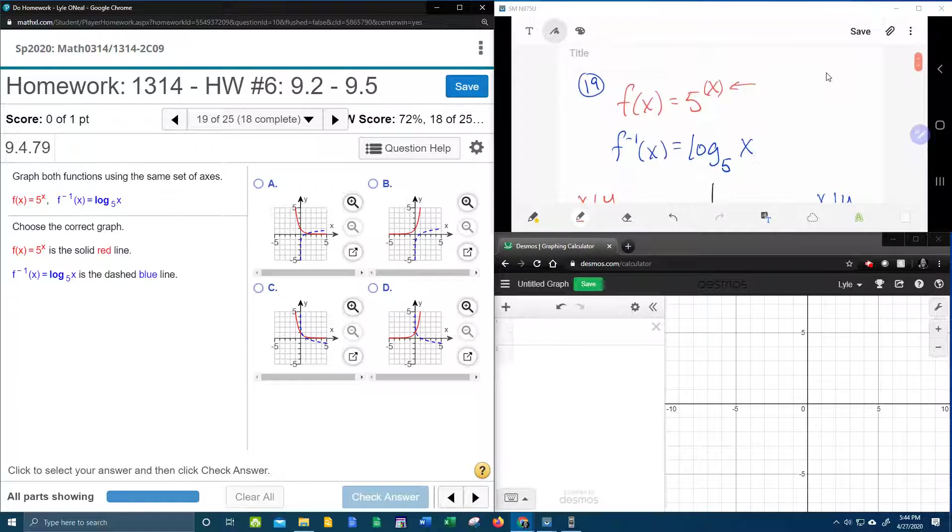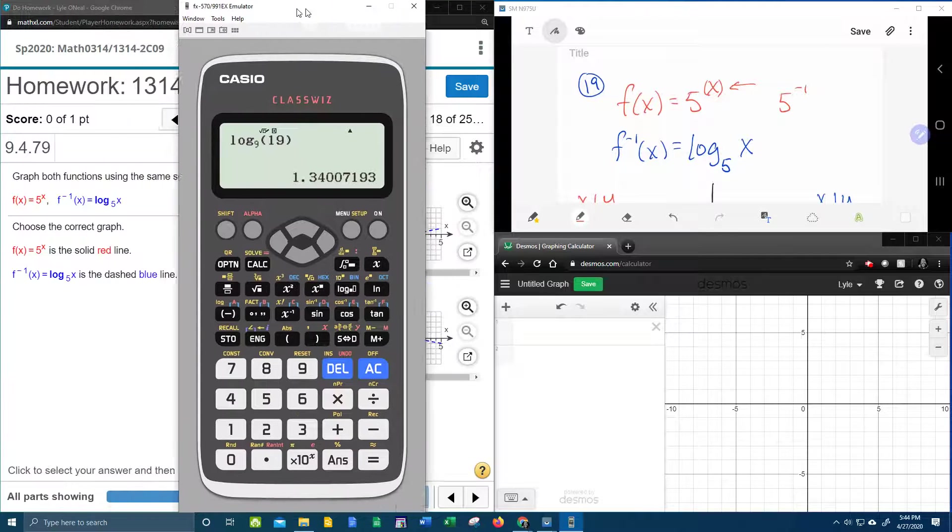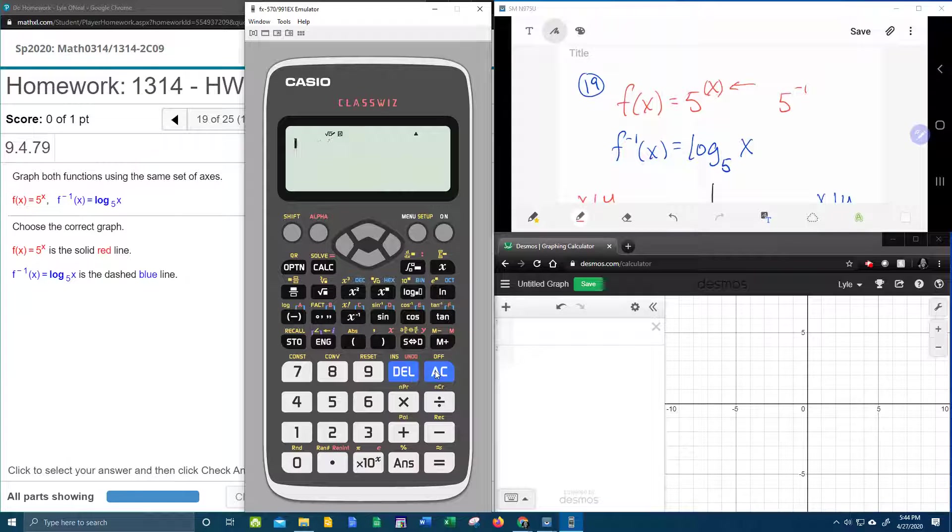So for x is negative 1, we need to calculate 5 to the negative 1. Now the easiest way to do that is with our handy dandy calculator. So if we clear that,